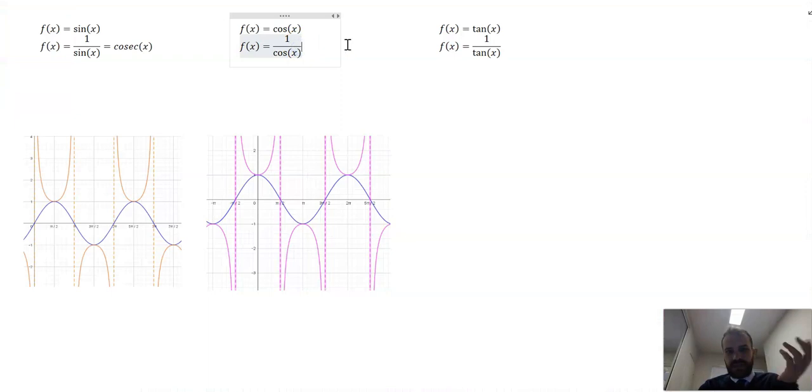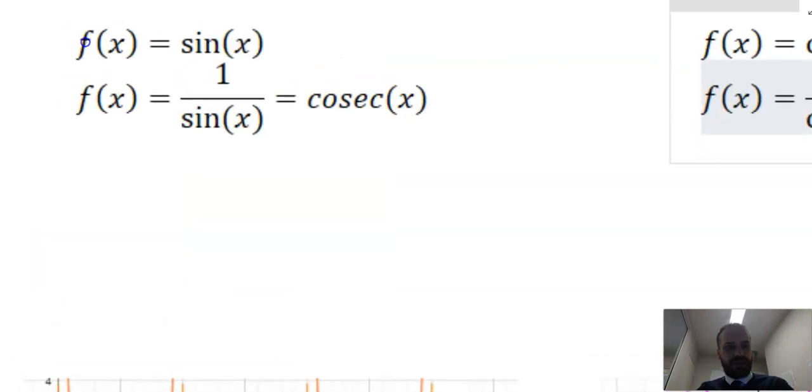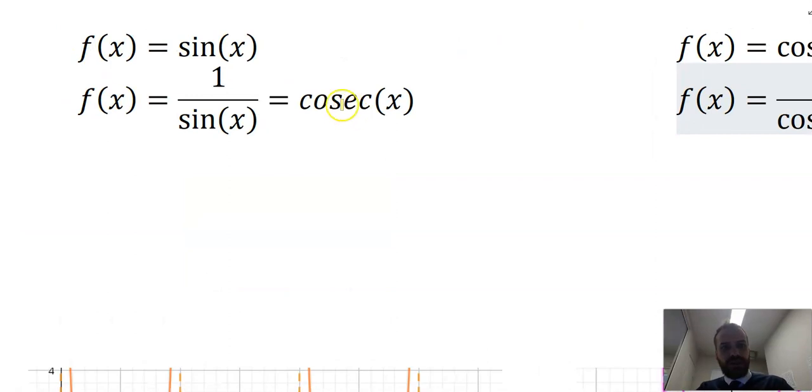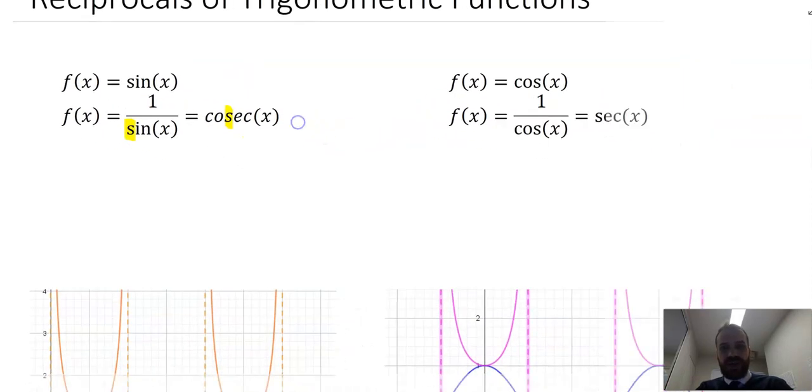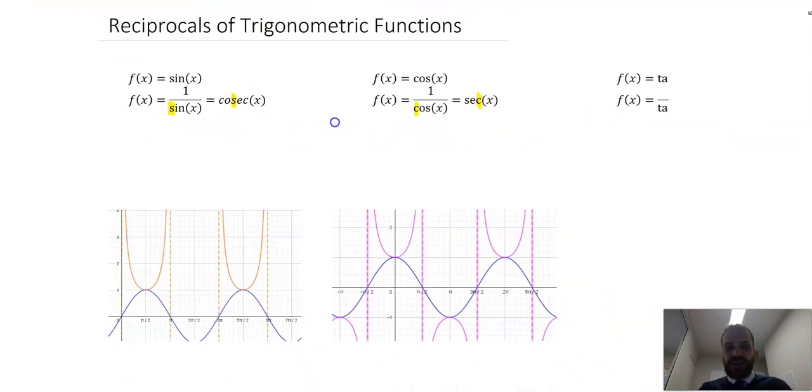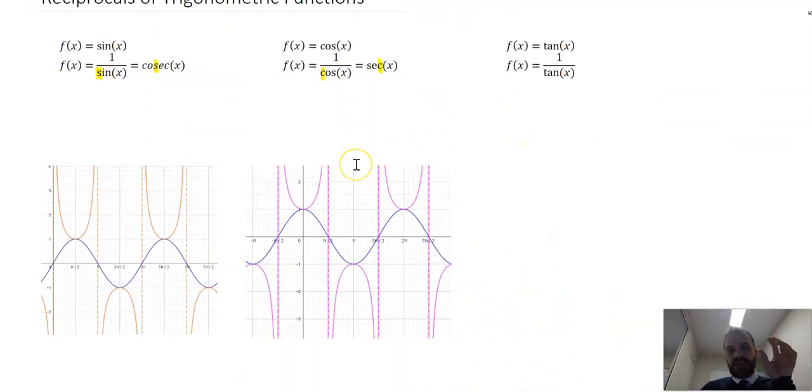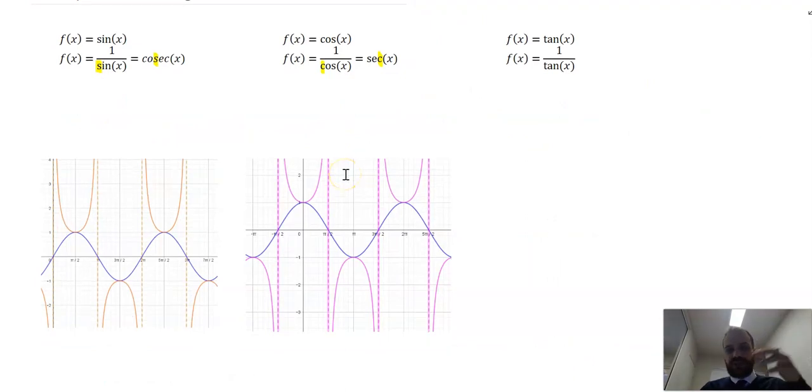Now of course, this has a fancy name as well. We call it sec x. So 1 on cos x and sec x are the same. Now people get confused here, but the way to remember the two of them, let's zoom in on this, is to look at the third letter of our reciprocal. So cosec matches up with sin x, and sec x matches up with cos x. Okay, so that's how you're going to remember which one matches up with which one.